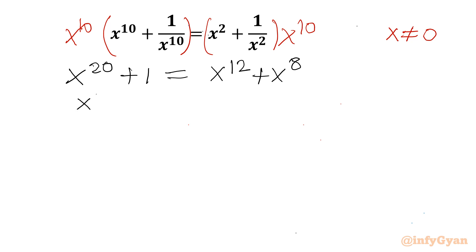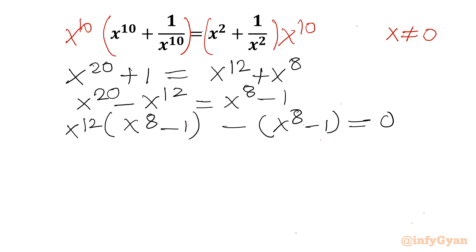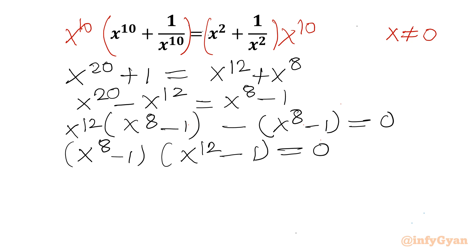Now I will rearrange the terms. I can write x^20 - x^12 = x^8 - 1. Now I can take x^12 common, which gives us x^12(x^8 - 1). Moving the RHS to the left gives 0. Now x^8 - 1 is common, so in the second bracket x^12 - 1 will be there. So RHS is 0.